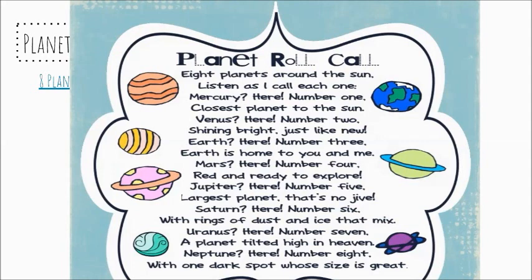Jupiter. Here. Number five. Largest planet. That's no jive. Saturn. Here. Number six. With rings of dust and ice that mix. Uranus. Here. Number seven. A planet tilted high in heaven. Neptune. Here. Number eight. With one dark spot whose size is great.